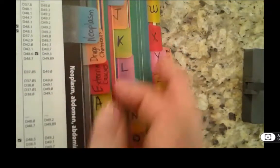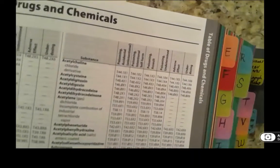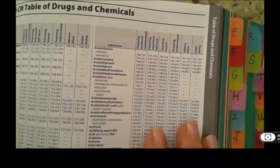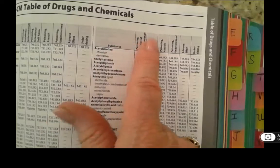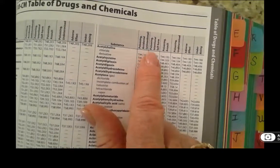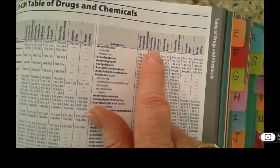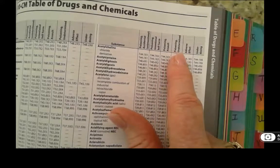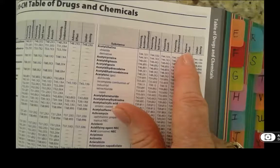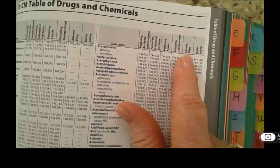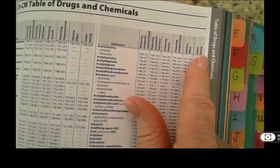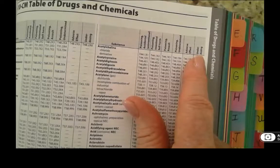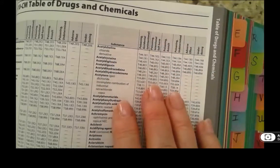My next tab is drugs and chemicals — the table of drugs and chemicals. When we get to this point you'll be looking up substances and then looking at these headings. The first is accidental poisoning, which is unintentional. The second column is intentional poisoning to harm yourself. Then a poisoning for assault where you are harming someone else. Poisoning is undetermined means we do not know who is hurting who. Adverse effect is a drug taken in the correct dose but the patient has a reaction to it. Underdosing is when a prescription has been written but the patient is not using it as prescribed.